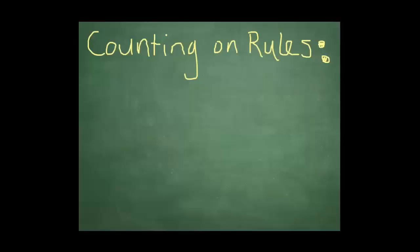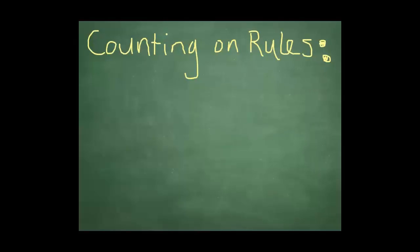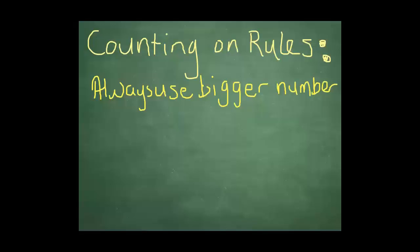Now, isn't that so much easier than having to count all those counters again? So to recap, what are the counting on rules? Always go with the bigger number. The next rule is, once you have the biggest number, count on from there.